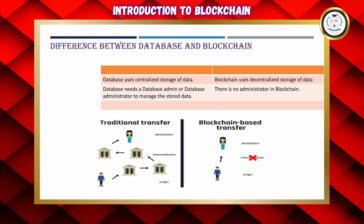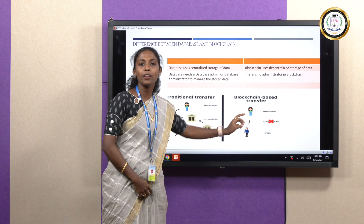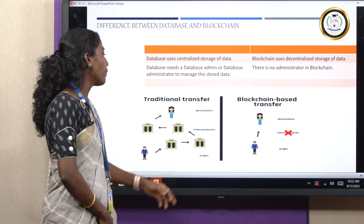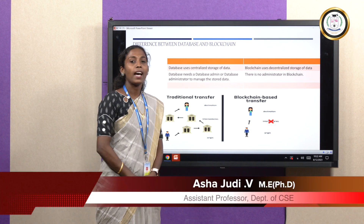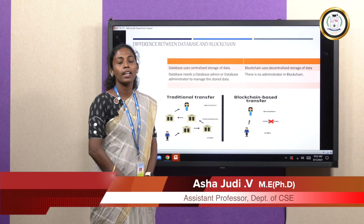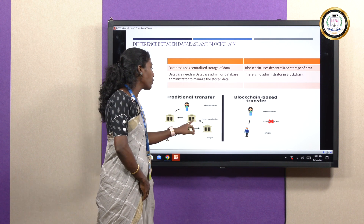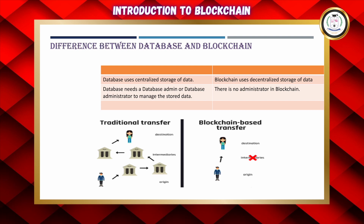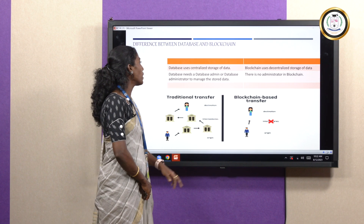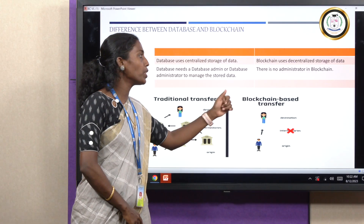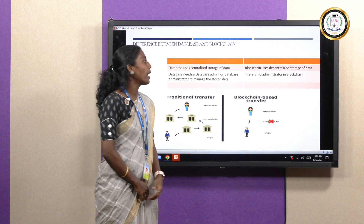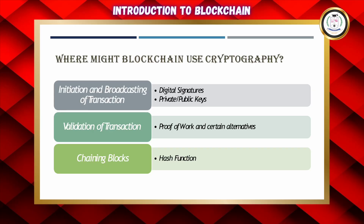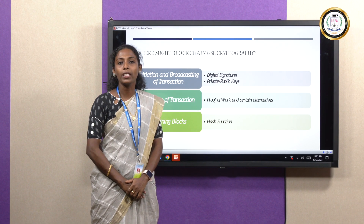Comparing a normal database with Blockchain, there is a key difference: there are no intermediaries, meaning no central authority. In a Blockchain network we can transfer money without any intermediaries. In traditional transfers, as per RBI guidelines, the bank must obey all regulations and only with the bank's approval can money be transferred. So a database uses centralized storage of data, while Blockchain uses decentralized storage. A database has an admin to manage it, whereas in Blockchain there is no administrator. Cryptography is used for security — to store data securely.